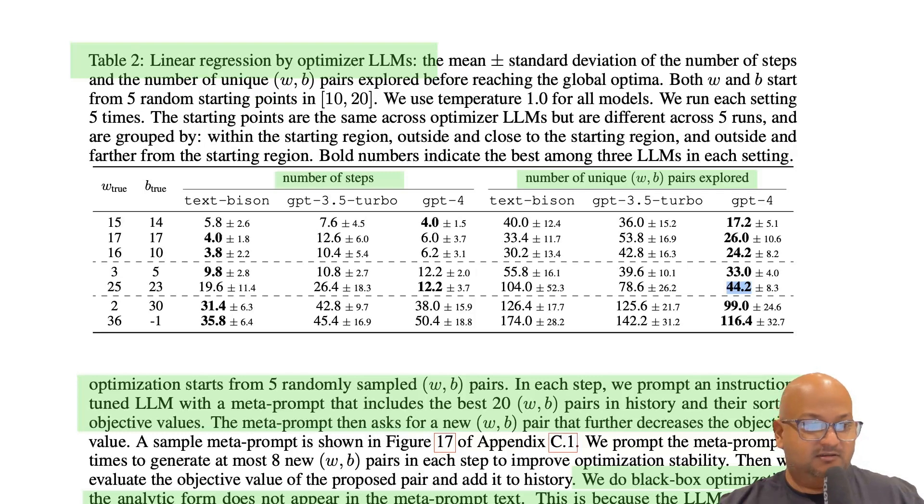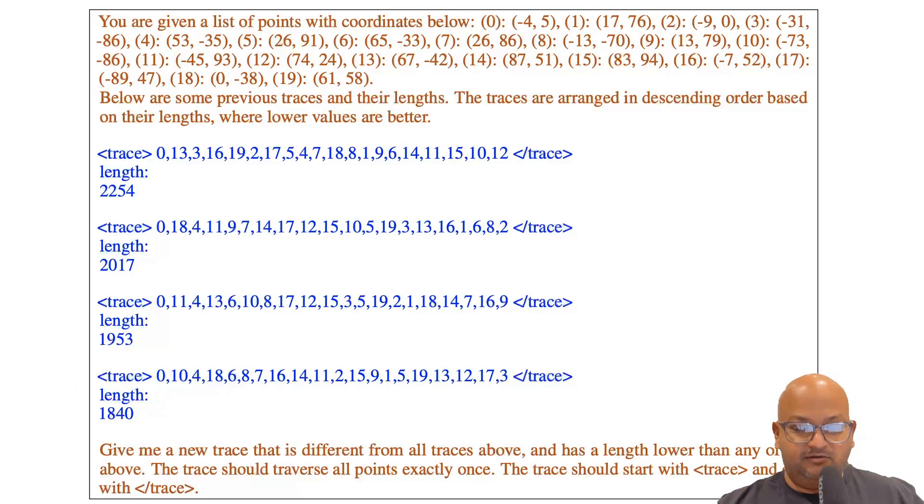They do something similar for traveling salesman where they frame the problem in terms of coordinates in 2D space and then use examples of traces through those points and the length of the journey through those points and ask the LLM to find a new trace that is different from all these given traces and has a total length lower than any of the above. So very similar to how the linear regression problem was set up.